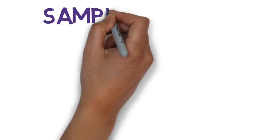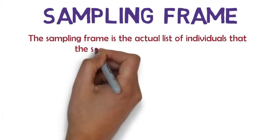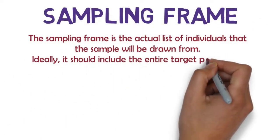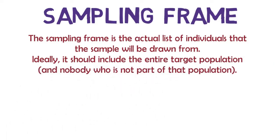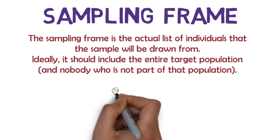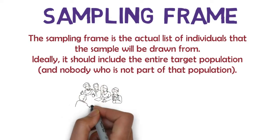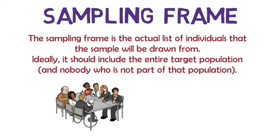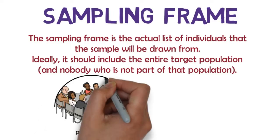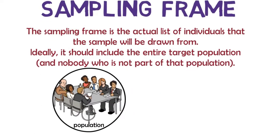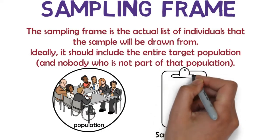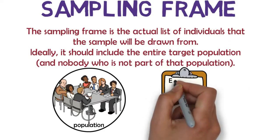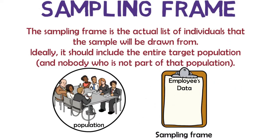Now let's look at sampling frame. The sampling frame is the actual list of individuals that the sample will be drawn from. Ideally, it should include the entire population and exclude every other person who is not part of that population. A good example of a sampling frame is doing research on the working conditions at a company. In this case, your population is all 1000 employees of that company, but your sampling frame is the company's HR database which lists the names and contact details of every employee.